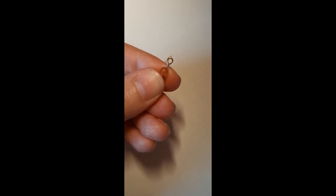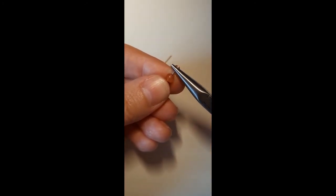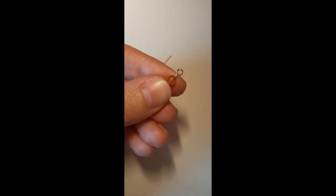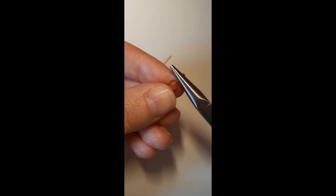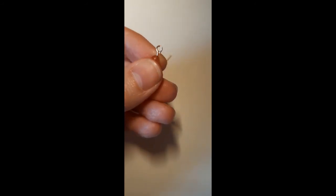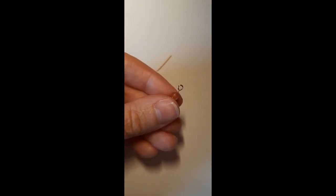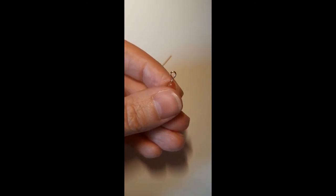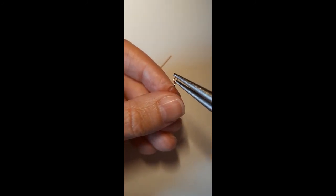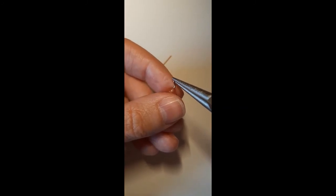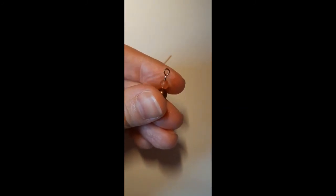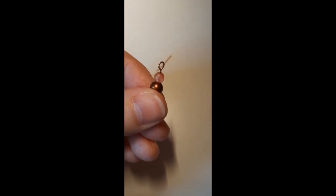To finish it off, I find if you just put your flat nose pliers over it and give it a gentle squeeze, that generally flattens it all out and makes it much neater and tidier. If your loop is looking a little bit wonky to one side, you can again put your round nose pliers in and just gently tease it across a little bit more like that. There we go.